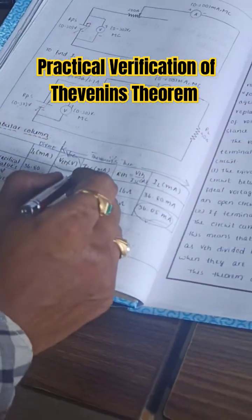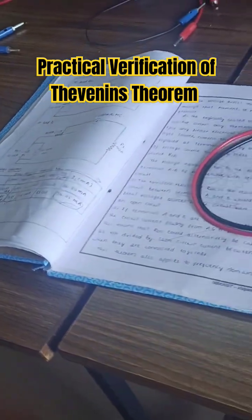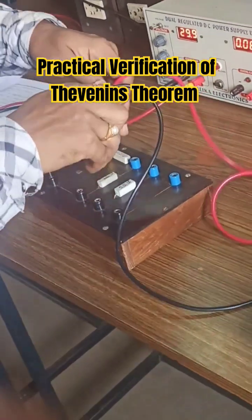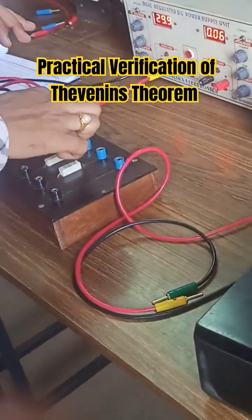And next one, we have to find out short circuit current. How to find the short circuit current is first remove the terminals of the voltmeter in this branch.